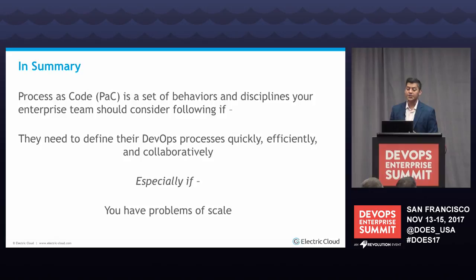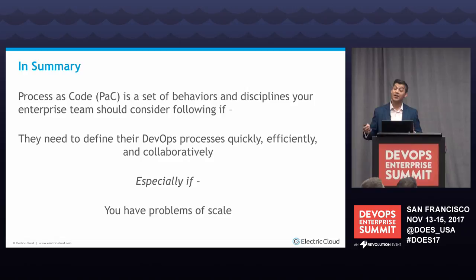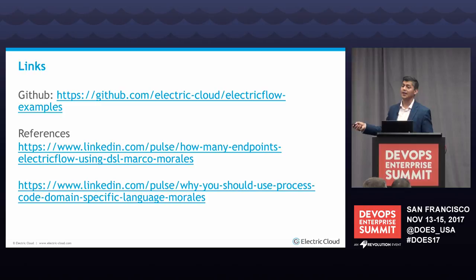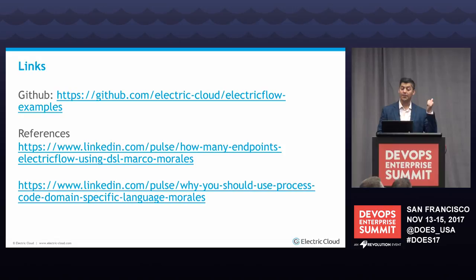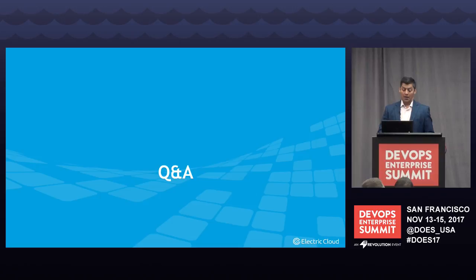In summary, process as code is a set of behaviors and disciplined software practices that your enterprise should consider if you want to define things quickly, efficiently, and with collaboration — especially if you have large numbers. The presentation will be published, and I have a blog or two with additional links that describe in high-level terms some of the specifics of how this works. Any questions — we'll have about five minutes.